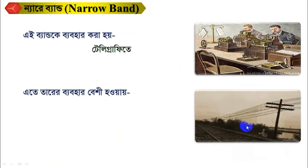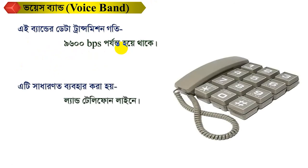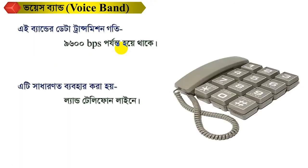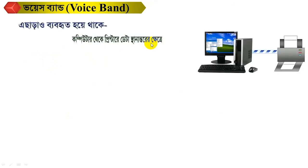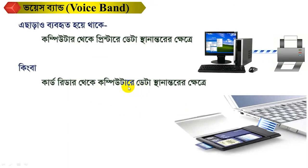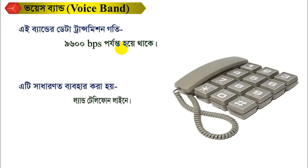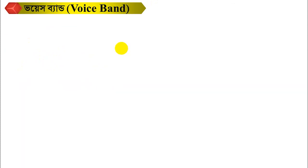The voice band is the same range as the narrowband. The computer data communication is the same; the printer is the same; the bandwidth is the same. The range of the narrowband — how much is it? It's about 9,600 BPS.